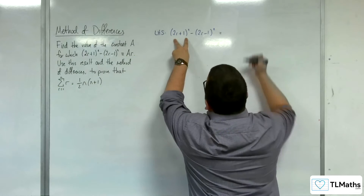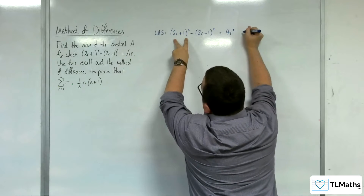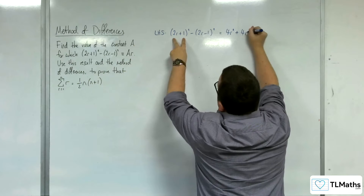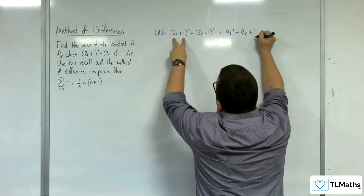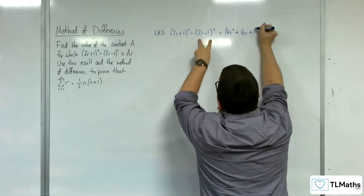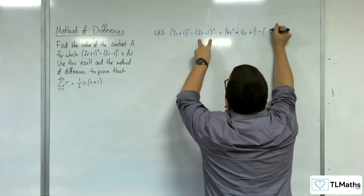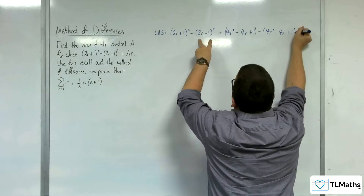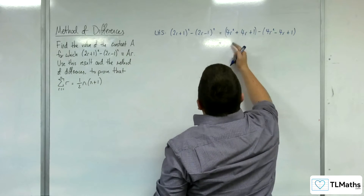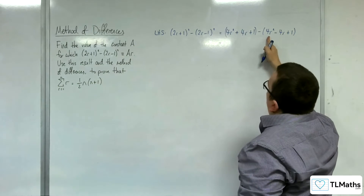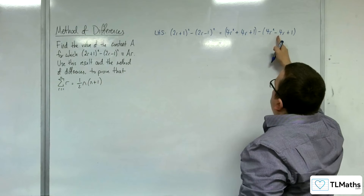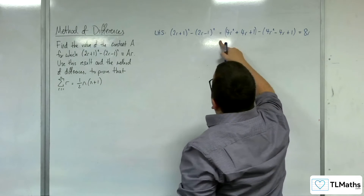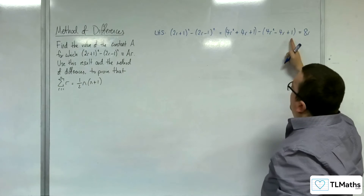Expanding the first brackets, we're going to get 4r² + 2r + 2r, so plus 4r + 1. And then from expanding the second set of brackets, we're going to get 4r² take away 4r + 1. So we've got 4r² take away 4r², and 4r take away minus 4r is 8r.